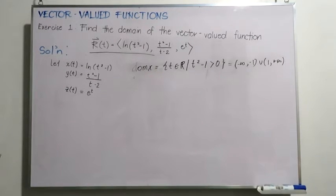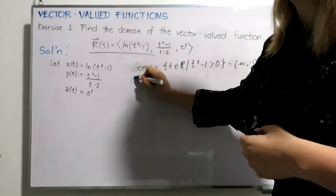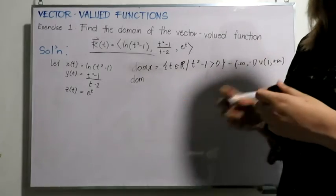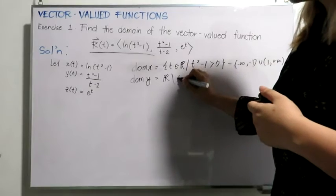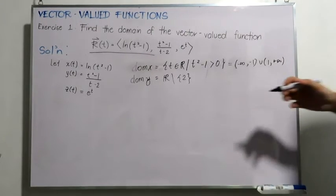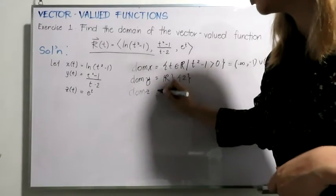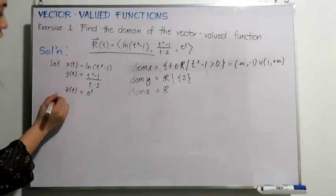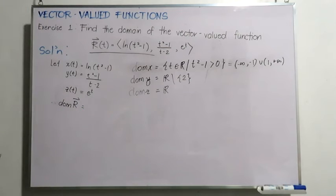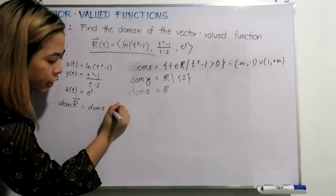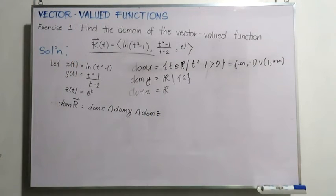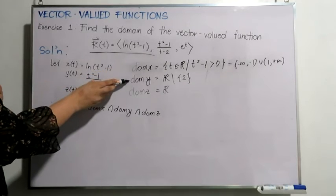The domain of y is easier to determine since we only need to remove values for which the rational function is undefined, and that is the value 2. So the domain of y consists of all real numbers R minus {2}. And lastly, since there is no restriction for the domain of the exponential function, the domain of z consists of all real numbers. Finally, the domain of R of T is equal to the intersection of the domain of x, the domain of y, and the domain of z, which is just the domain of x minus the value 2.